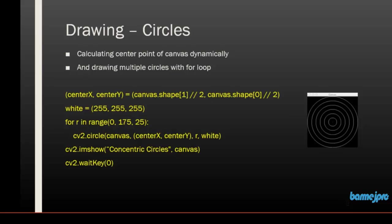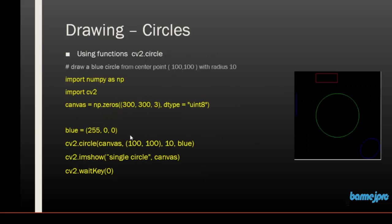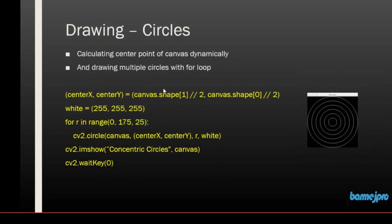This code calculates the center dynamically. In the previous example the center point was a constant (100, 100), but here we calculate it based on the canvas size. center_x is canvas.shape[1] divided by 2, giving the horizontal center, and center_y is canvas.shape[0] divided by 2, giving the vertical center. Both joined together give the center point of the canvas. We define the color as white — white means all three channels (R, G, B) are 255.